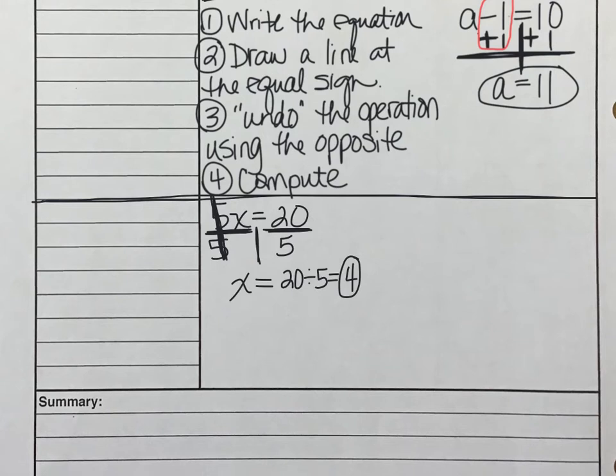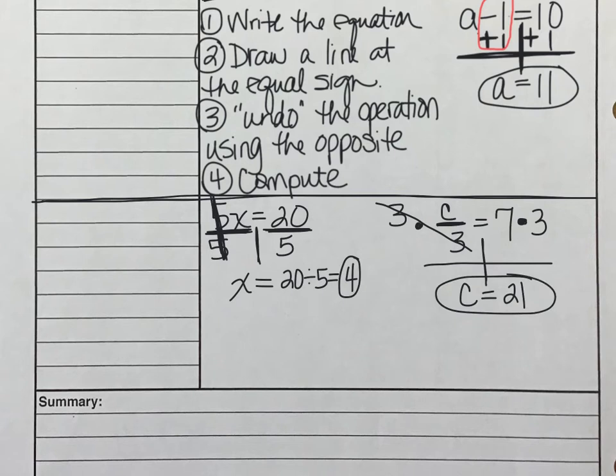We also have division equations. And you'll see that the division equations are often written in the form of a fraction, like so. In this equation, we're still having to undo the operation. But in this case, we have to undo division. Well, we undo division by using multiplication. So we're going to multiply both sides by the number in the division problem, which in this case is 3. And multiplying and dividing by 3 both provide for us the same answer, which in this case is just c. And c must be equal to 7 multiplied by 3, which is 21. Because 21 divided by 3 equals 7. That takes us back to our original equation.